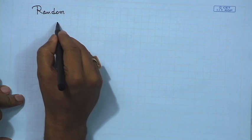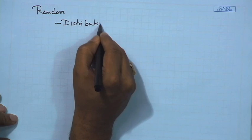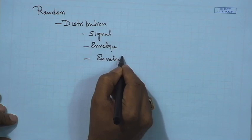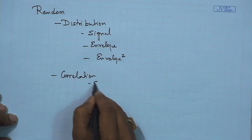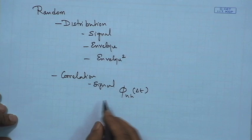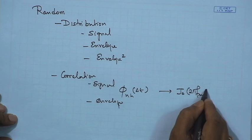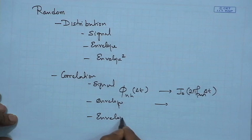With that we have summarily covered the random signal. To characterize it, we have looked at the distribution of the signal, of the envelope, and of the envelope squared. We have also looked at the correlation of the signal through φ_HH(Δt), and for the envelope we have found it to be J0(2π f_m Δt). For the envelope squared we have found it to be J0 squared of the same term.